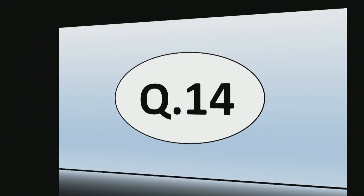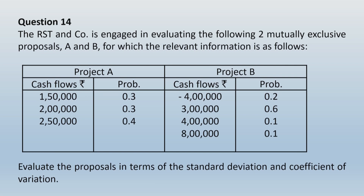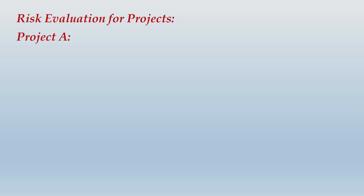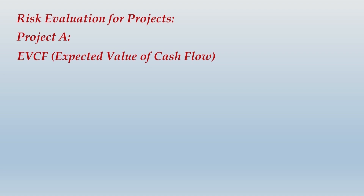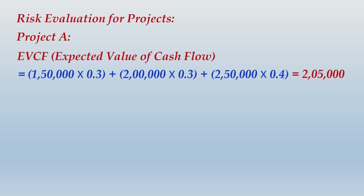Question number 14: The RSTN company is evaluating two mutually exclusive proposals A and B for which relevant information is given — cash flows along with probabilities for both projects. The question asks to evaluate the proposals in terms of standard deviation and coefficient of variation. We have already learned how to compute standard deviation; now we additionally apply coefficient of variation. For project A, EVCF comes to rupees 2,05,000.